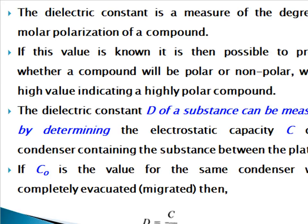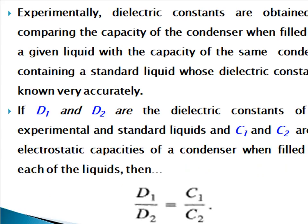On the basis of dielectric constant we can judge the process. The dielectric constant D of a substance can be measured by determining the electrostatic capacity C of a condenser containing the substance between the plates. If C₀ is the value for the same condenser when completely evacuated, then D is equal to C divided by C₀. Experimentally, dielectric constants are obtained by comparing the capacity of a condenser filled with a given liquid against one containing a standard liquid of known dielectric constant. If D₁ and D₂ are the dielectric constants of the experimental and standard liquids, and C₁ and C₂ are the electrostatic capacities, then D₁/D₂ = C₁/C₂.